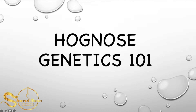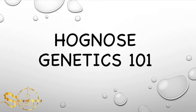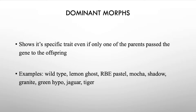All right, let's get into some hognose genetics 101. The outline: we're going to start off with dominant morphs, then transition to incomplete dominant, then recessive, and then mixed in we're going to go over some probabilities once you pair some of the different parents.